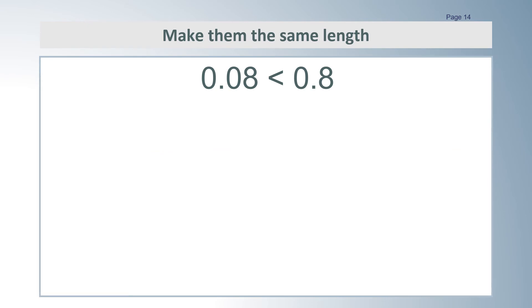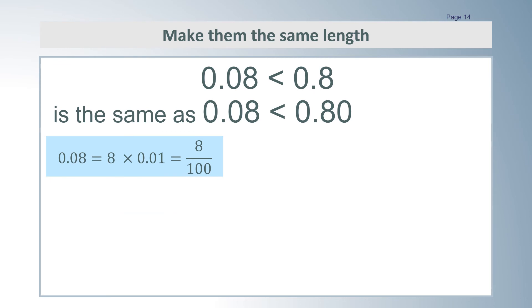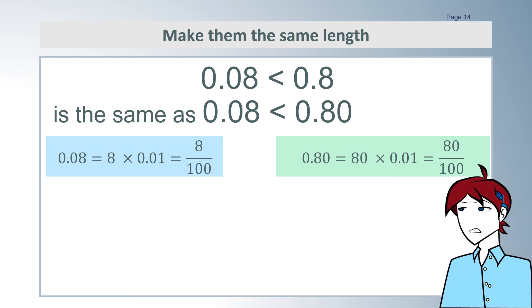Here is another way to compare two decimals with different numbers of digits. Put some more digits on so that they have the same number of digits. In this example, we put a 0 on the right-hand end representing 0 hundredths. We are adding nothing. Then both the two-digit numbers can easily be expressed as hundredths. 0.08 is 8 hundredths and 0.80 is 80 hundredths. Or, you could think of them as 8 cents and 80 cents.